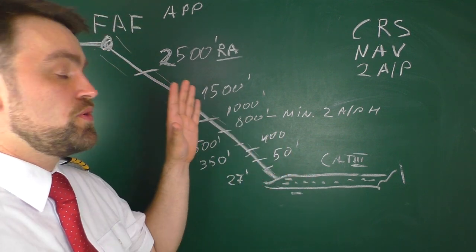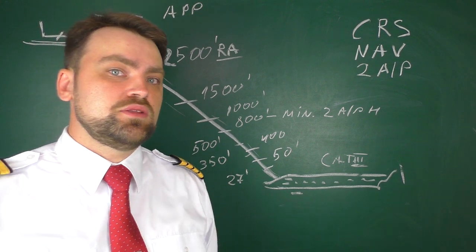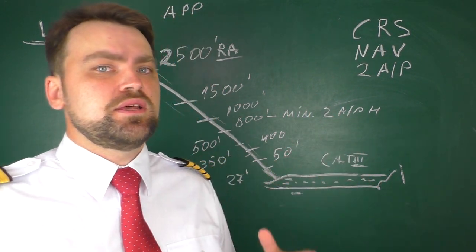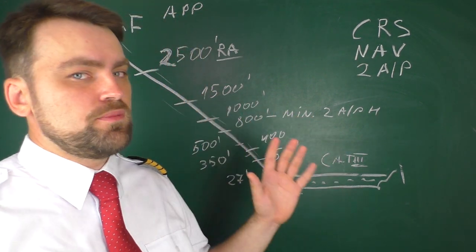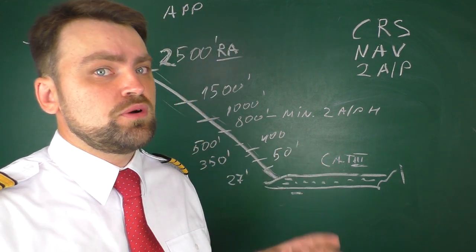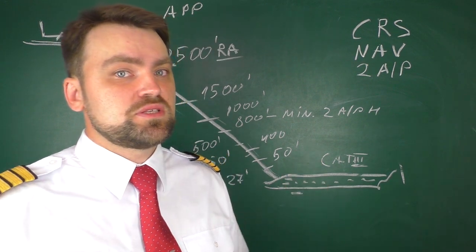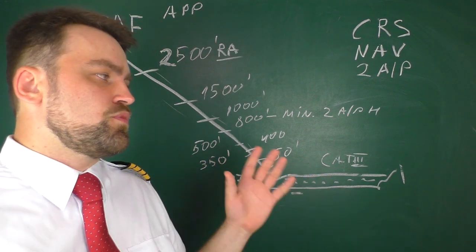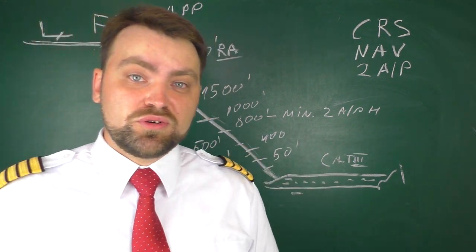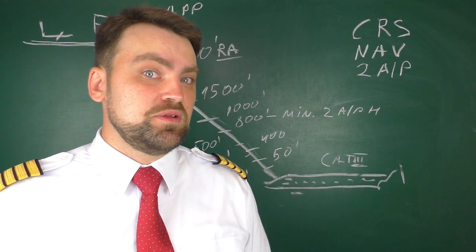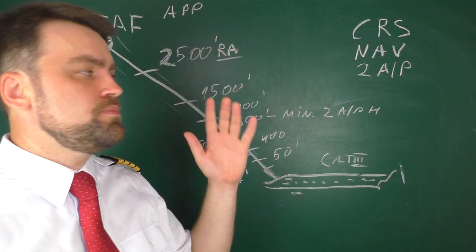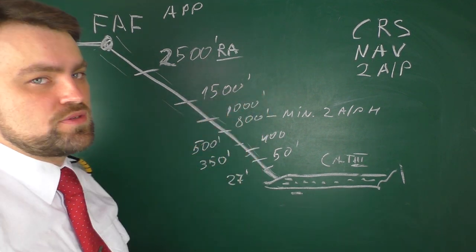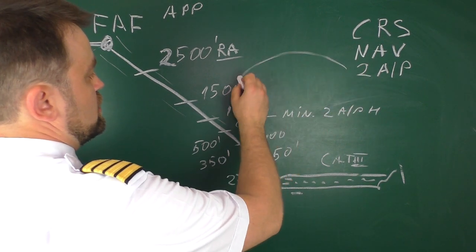For Category 1, you set the baro minimum using the altimeter; for Category 2 and 3, you use the radio altimeter setting for minimum verification — that's the key difference. Why do we need two autopilots? Because they use a fail-passive system — both autopilots monitor each other's operation, and the flight control surfaces respond only to the autopilot commanding the lower deflection. If one commands higher deflection, both autopilots disconnect and you must go around.